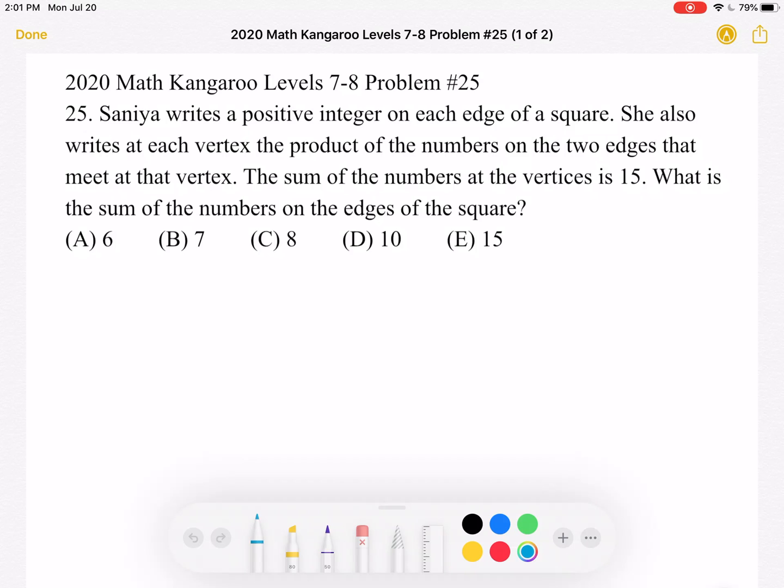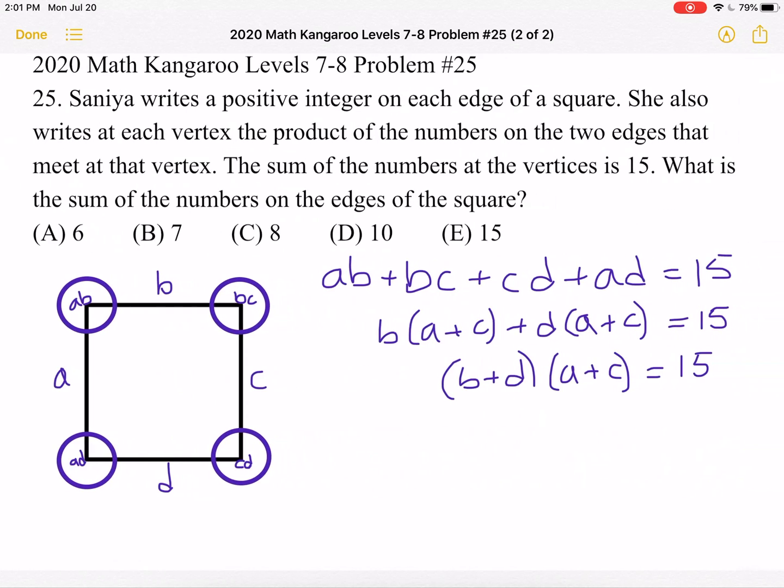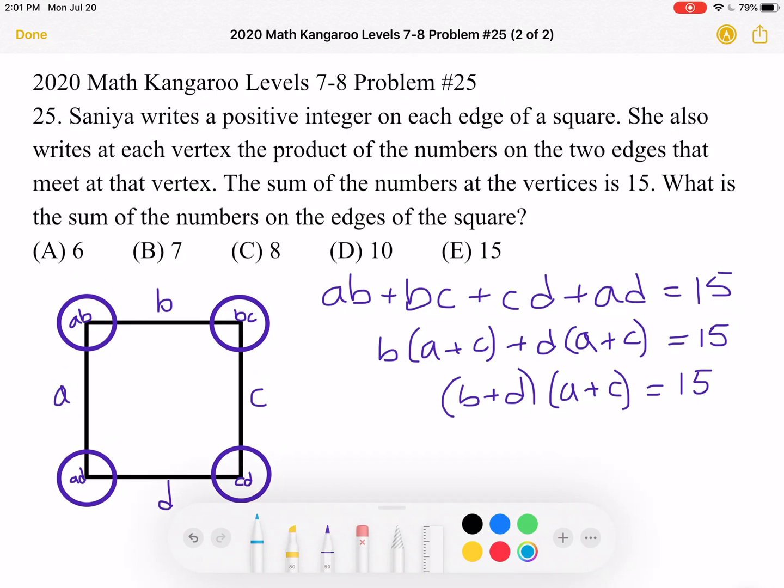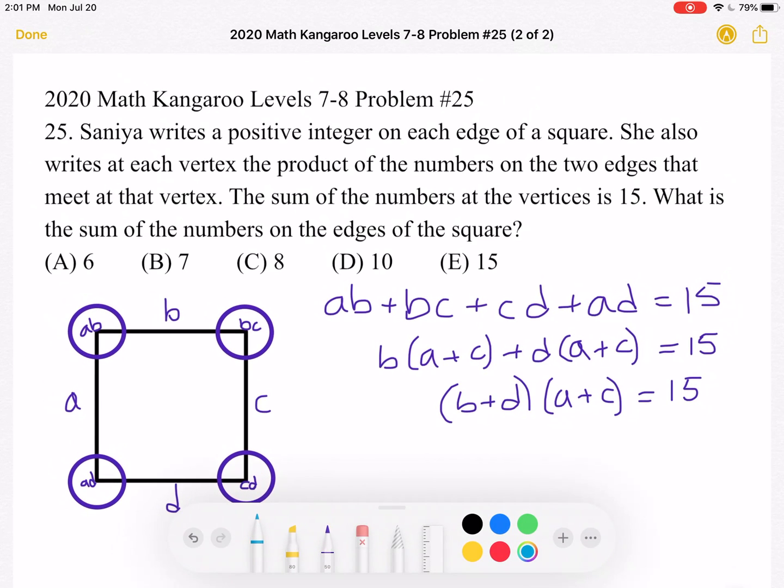This is the problem as it originally appeared on the test, and here is where we will be doing the solution. To start, I've drawn a square and labeled the edges A, B, C, and D, because in the problem it states that she writes a positive integer on each edge of the square, which I've represented with variables.